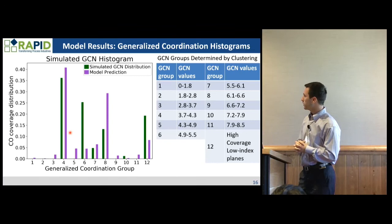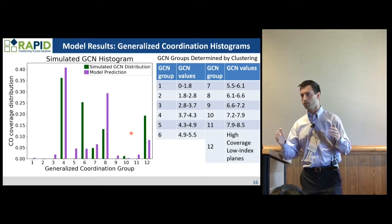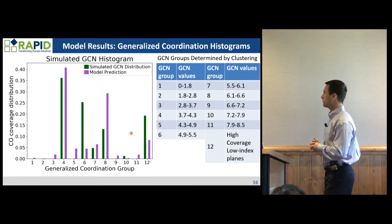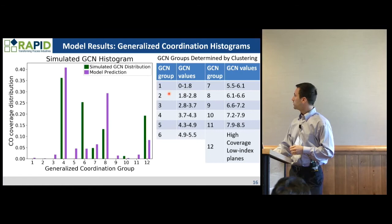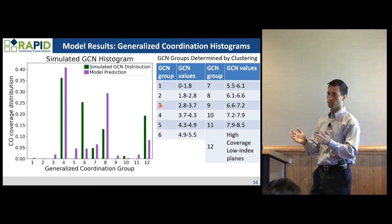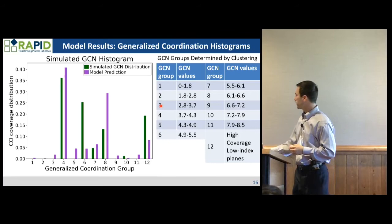GCN is actually a continuous value — it's this average coordination — so we need to discretize it. We use an unsupervised method to discretize it. You can see the GCN values and the GCN groups; we use k-means clustering, which gives even amounts of data in each group. You want even amounts of data in each group with as evenly spaced groups as possible to extract the most information.